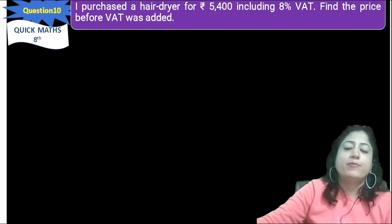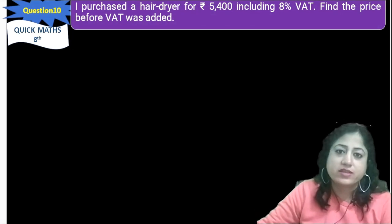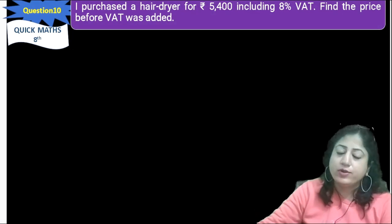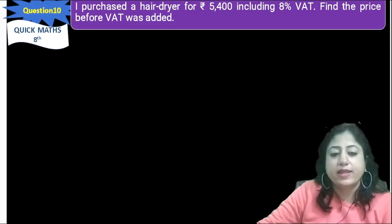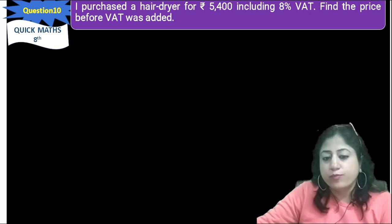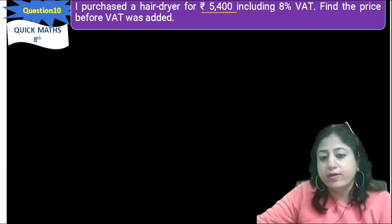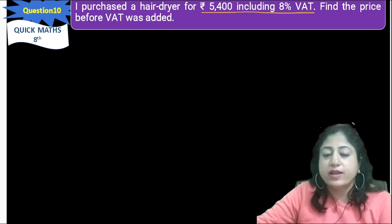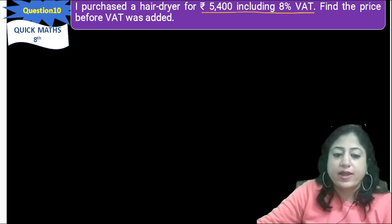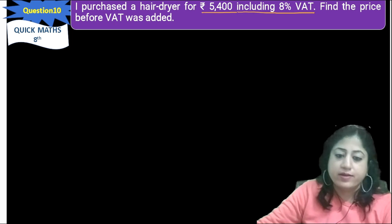Hello everyone, I am Richa Godd from Quick Mass. Exercise 8.2, Question number 10. I purchased a hair dryer for Rs. 5,400 including 8% VAT. Find the price before VAT was added.